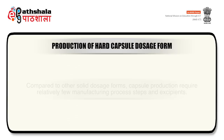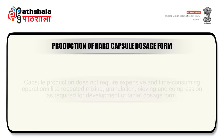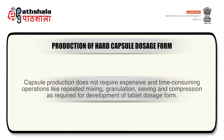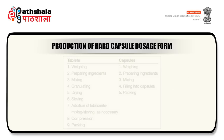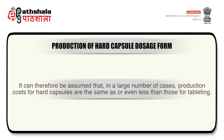Compared to other solid dosage forms, capsule production requires relatively few manufacturing process steps and excipients. Capsule production does not require expensive and time-consuming operations like repeated mixing, granulation, sieving, and compression as required for tablet development. For tablets, the steps include: weighing, preparing ingredients, mixing, granulating, drying, sieving, addition of lubricants, compression, and packing. For capsules, the steps are: weighing, preparing ingredients, mixing, filling into capsules, and packing. It can therefore be assumed that in many cases, production costs for hard capsules are the same as or even less than that of tableting.